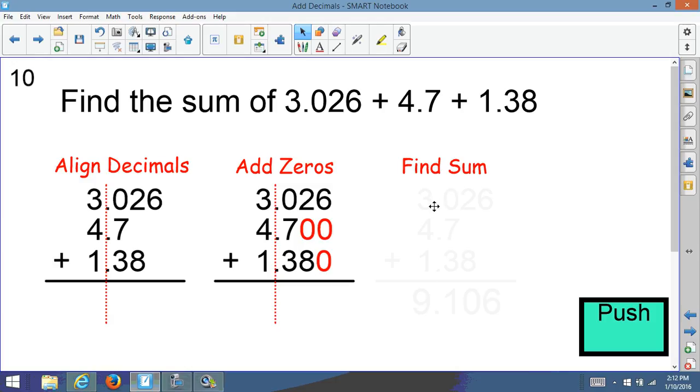So now find the sum. So I'm going to add it up. 6 plus 0 is 6. 2 plus 0 plus 8 gives me 10. Carry the 1.